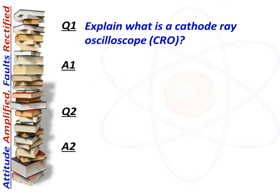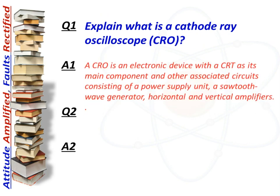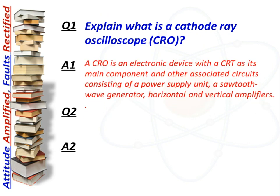Here is the first question: what is a cathode ray oscilloscope? Answer: A CRO is an electronic device with a CRT as its main component and other associated circuits consisting of a power supply unit, a sawtooth wave generator, and horizontal and vertical amplifiers.